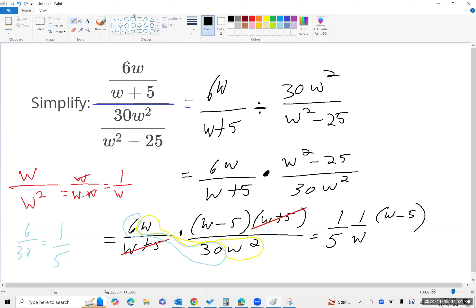So that's essentially the final answer, but when you turn this in, what they want to see is the w minus 5 in the numerator and the 5w in the denominator.